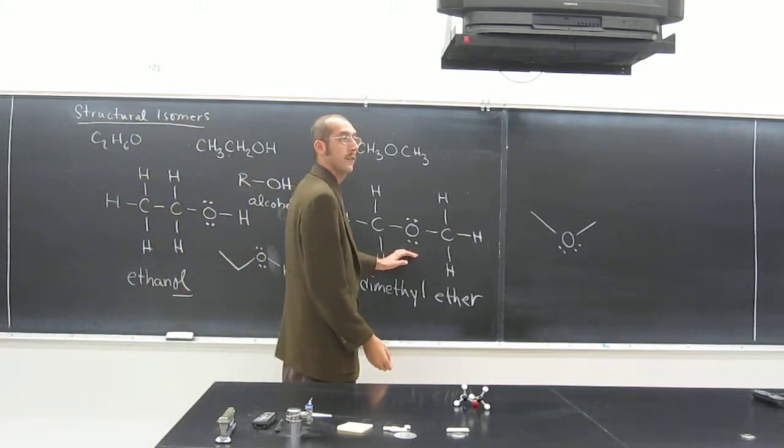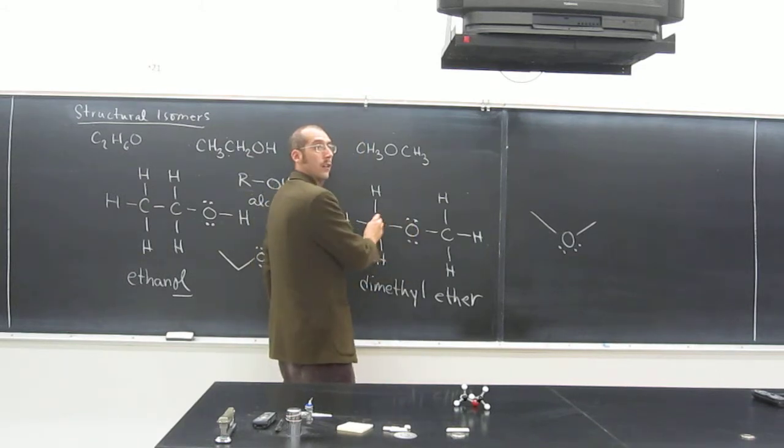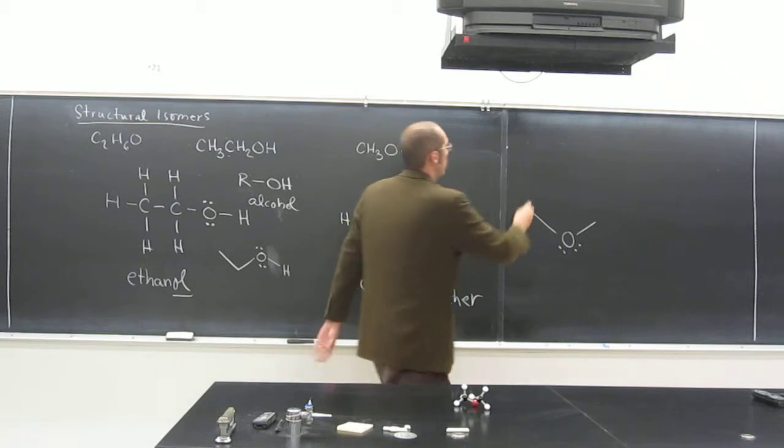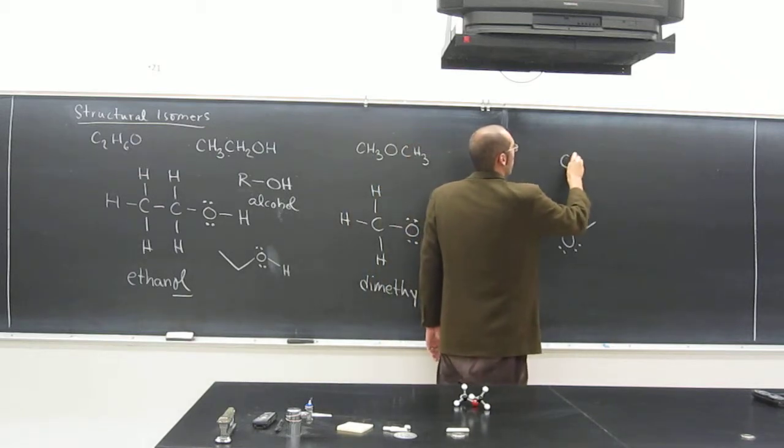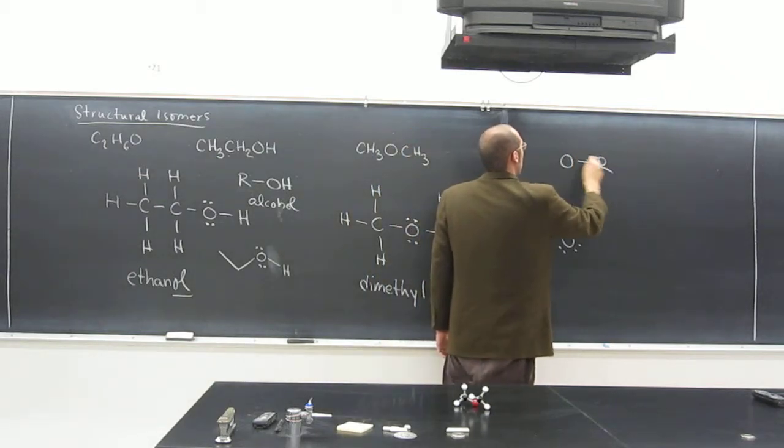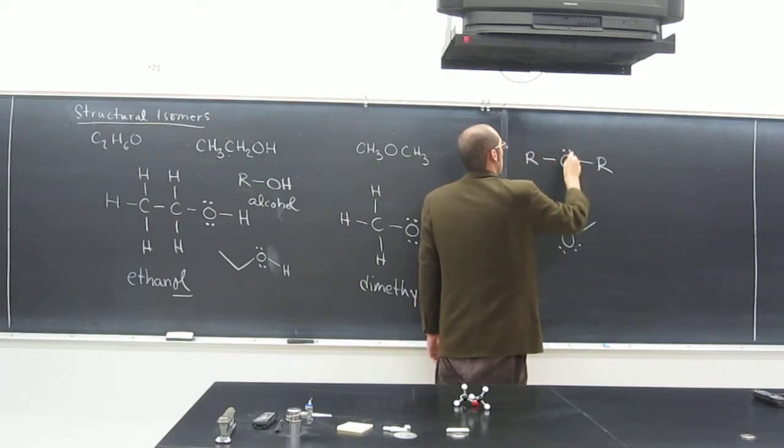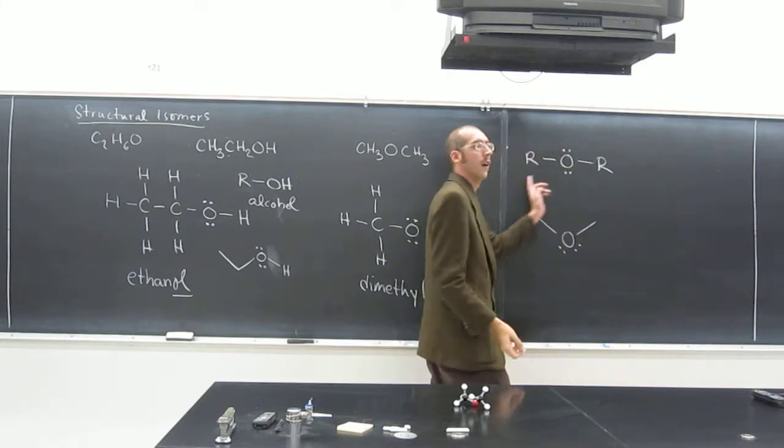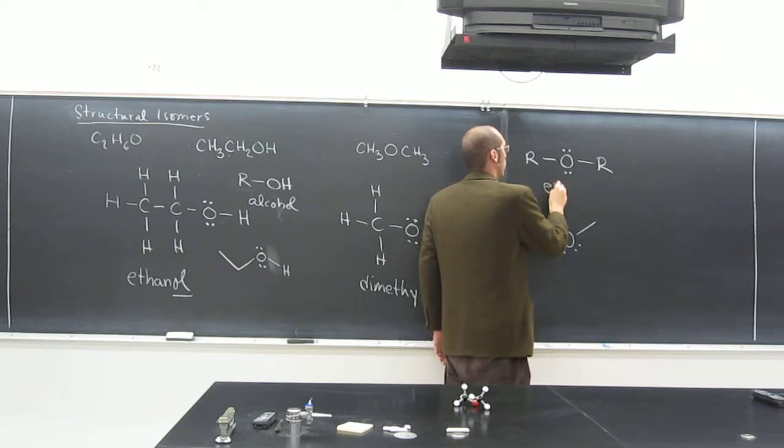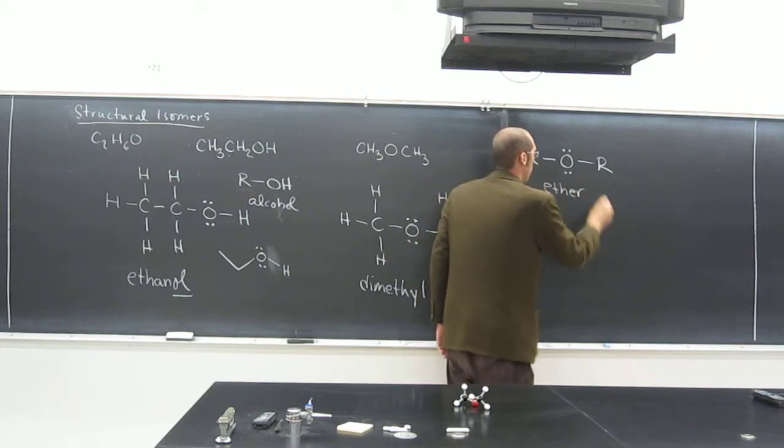Anything that looks like this, that's got an oxygen in the middle of two carbons, like that, two carbons with hydrogens around it, so something that has the general structure of this, we call an ether.